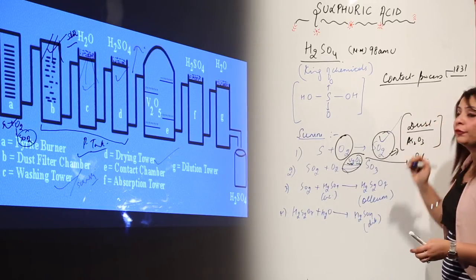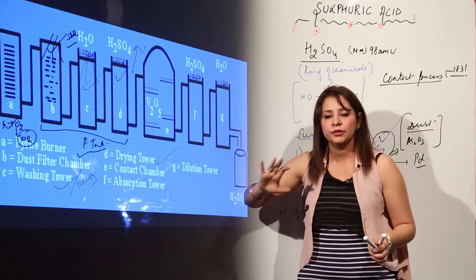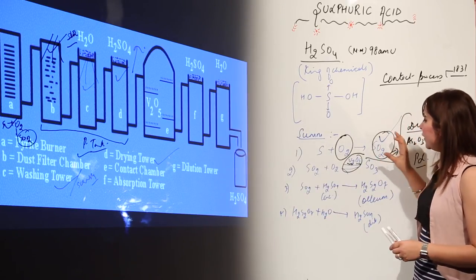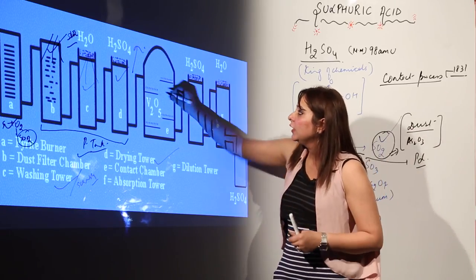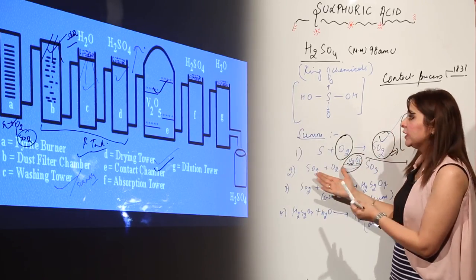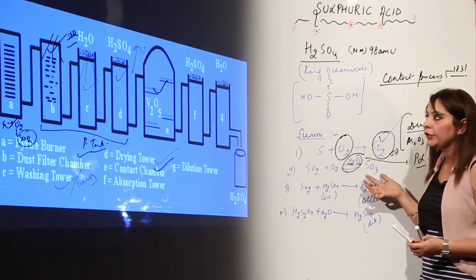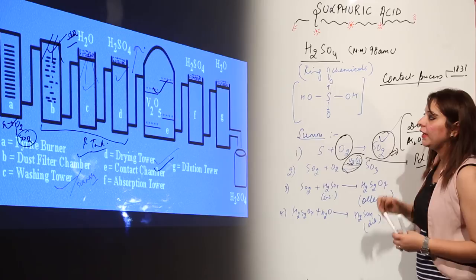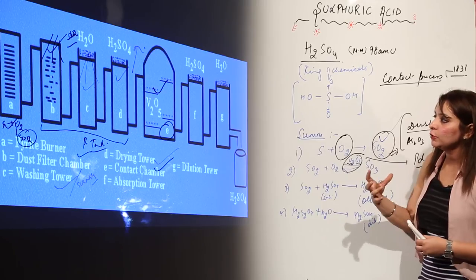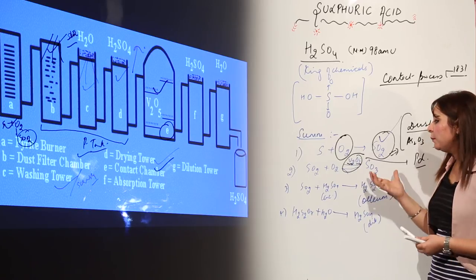After all purification, the pure SO2 is fed into tank E, called the contact tower. Here, SO2 reacts with oxygen in the presence of vanadium pentoxide (V2O5) to yield SO3. This is where the second reaction takes place, and the output from the E tower is sulfur trioxide.